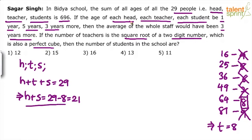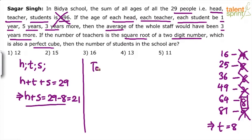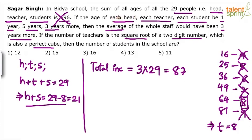He says if each head, each teacher and each student's ages are increased by 1 year, 5 years and 3 years, then the average of the whole staff would increase by 3 years. There are total 29 people. The average increases by 3 years for 29 people, so 3 into 29 equals 87. The total increment is 87 years. This happened because each head's age increased by 1 year, each teacher's by 5 years, and each student's by 3 years.